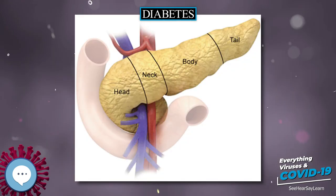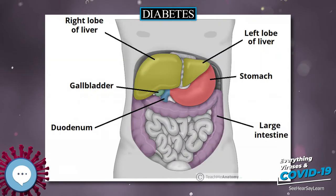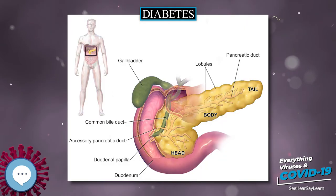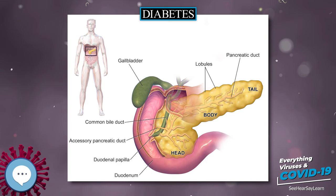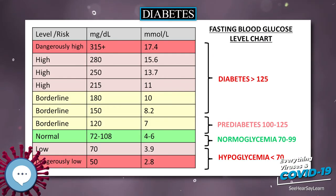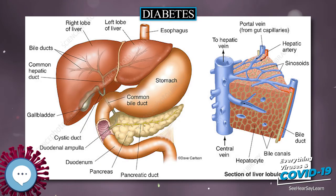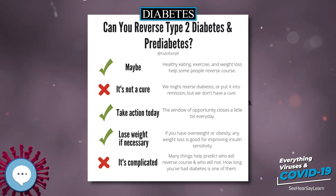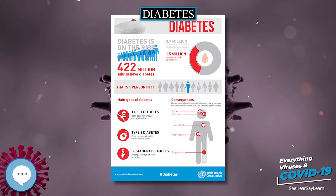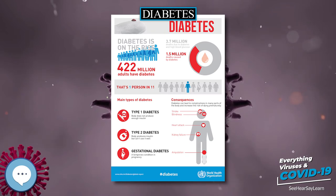Tobacco smoking is also associated with an increased risk of diabetes and its complications, so smoking cessation can be an important preventive measure. The relationship between type 2 diabetes and the main modifiable risk factors — excess weight, unhealthy diet, physical inactivity and tobacco use — is similar in all regions of the world. There is growing evidence that the underlying determinants of diabetes are a reflection of the major forces driving social, economic and cultural change: globalization, urbanization, population aging, and the general health policy environment.